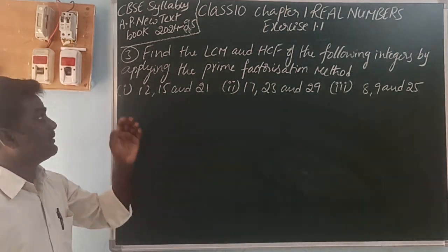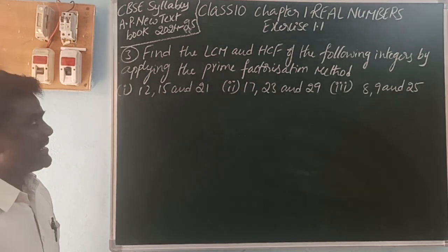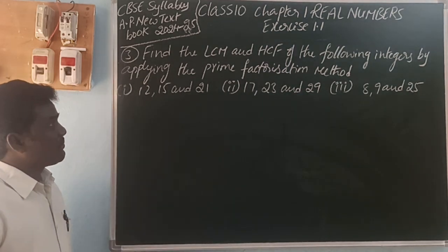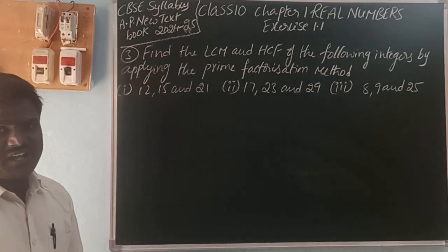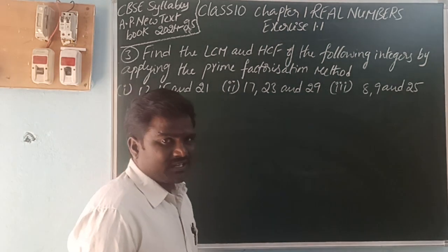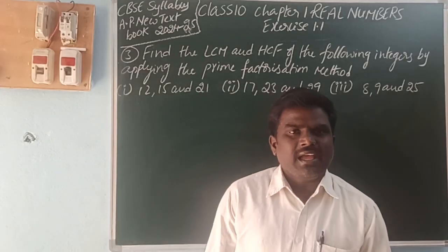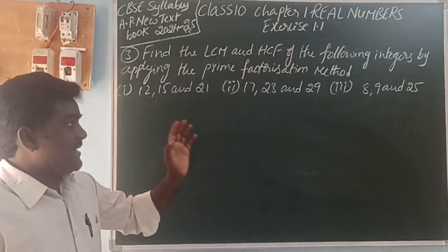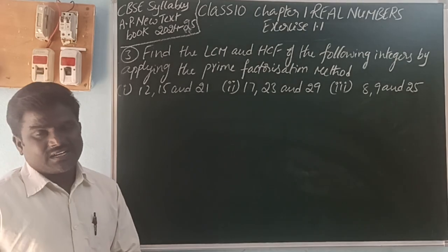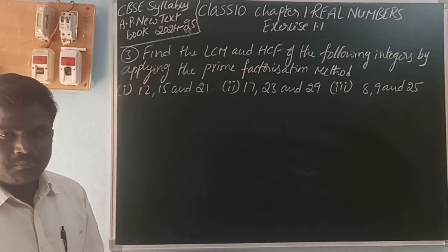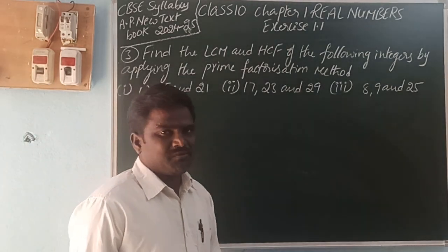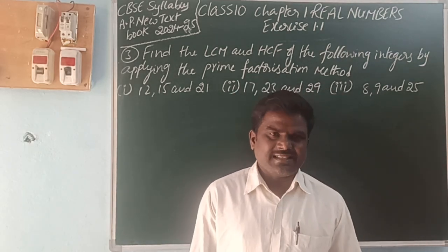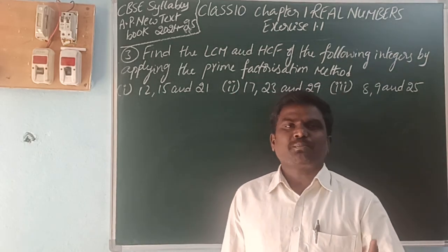In exercise 1.1, the third question: find LCM and HCF of the following integers by applying the prime factorization method. Prime factorization method means a number can be expressed as a product of prime factors.